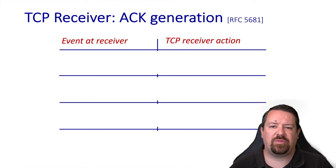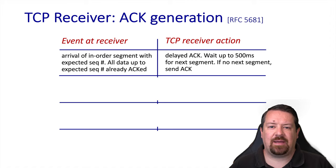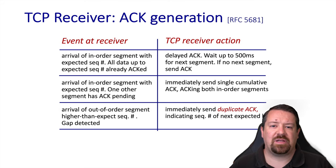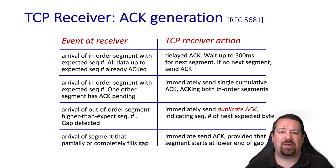On the receiver side, we have a few different events. One is the arrival of an in-order segment with the expected sequence number. The TCP receiver implements a delayed ACK — it waits a little bit to see if another segment arrives before sending a cumulative ACK for both segments. If no additional segment arrives within this time, it ACKs the individual segment. If a second segment arrives, it immediately ACKs the two received segments with a single cumulative ACK. If a segment arrives out of order, the receiver sends duplicate ACKs for the previously received segments. If a packet arrives filling a gap between in-order and out-of-order packets, it will be immediately ACKed without using the delayed ACK method.